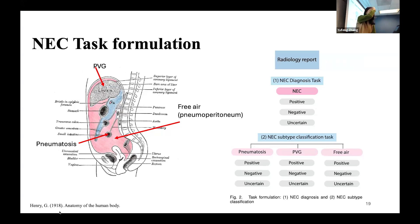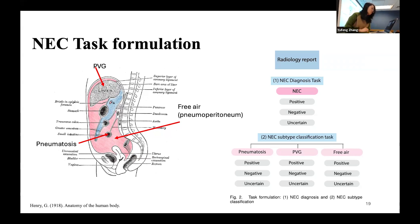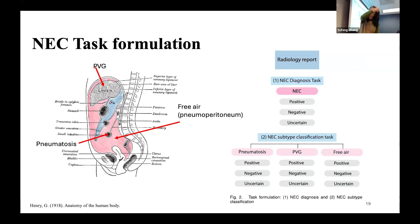A performance comparison shows the large language model achieves really good performance compared to standard and BERT-based models, so it shows promise — but we cannot use GPT. The NEC task involves air in the intestine. The first subtype is pneumatosis — air in the intestine wall. The second is PVG, portal venous gas, where air flows along the vein into the liver.